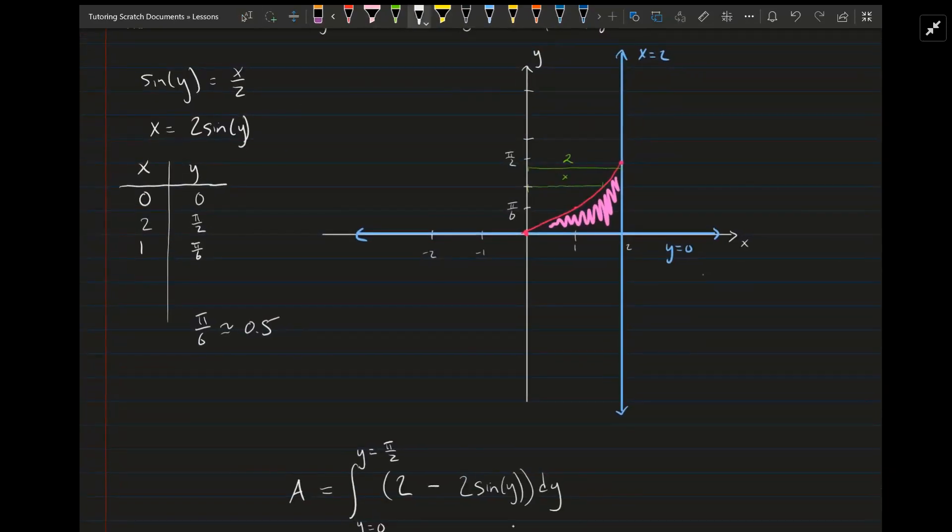And then you can make a table, you can plug in y values first, and then get out what x might be. I just did three points, because that's really all you need to get a sense for it. So when y is 0, sine is 0, so x is 0.